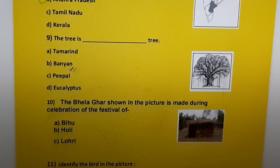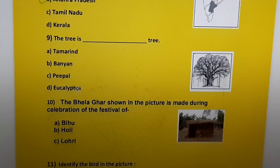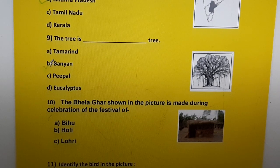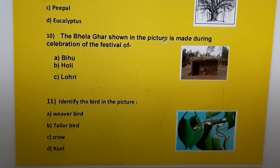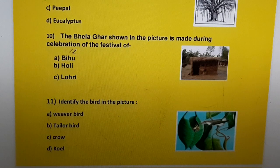Question nine: The tree shown is a dash tree. Options are a) tamarind, b) banyan, c) peepal, d) eucalyptus. The correct answer is b) banyan tree.